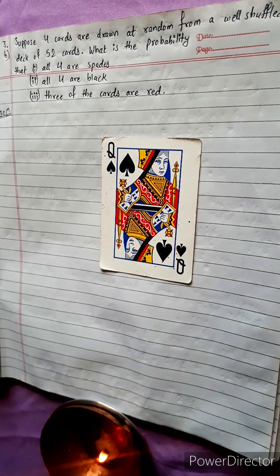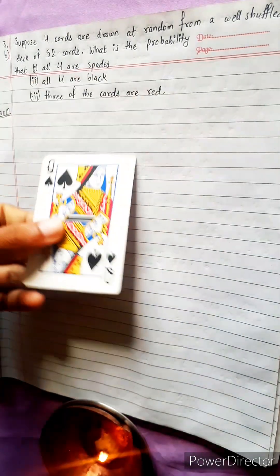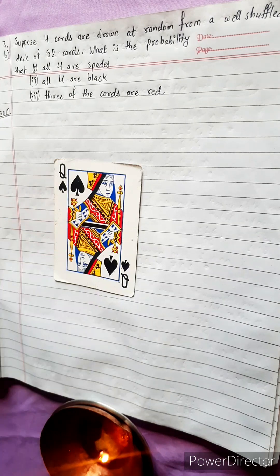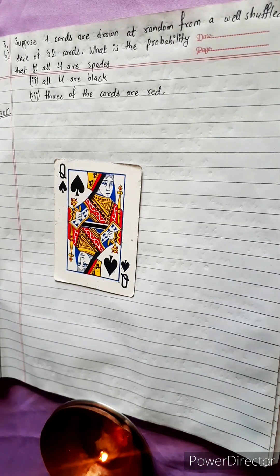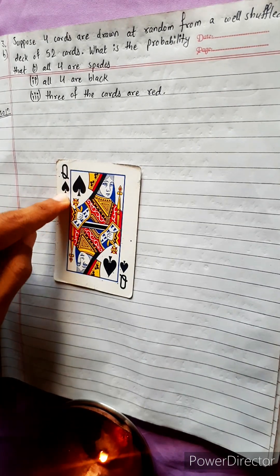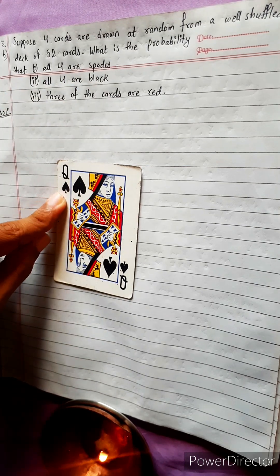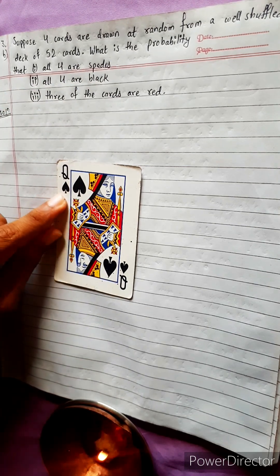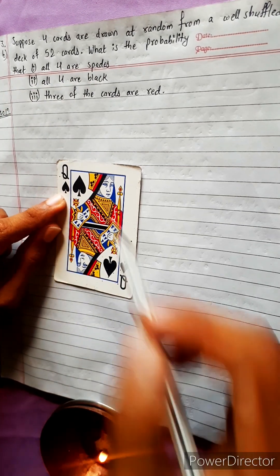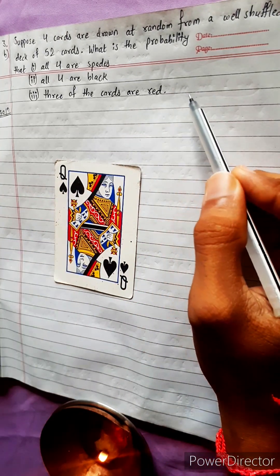Suppose 4 cards are drawn at random from a well-shuffled deck of 52 cards. What is the probability that: all 4 are spades, and all 4 are black?